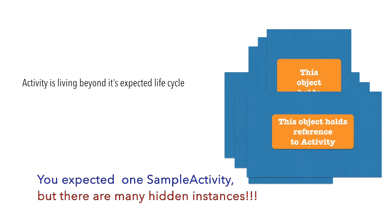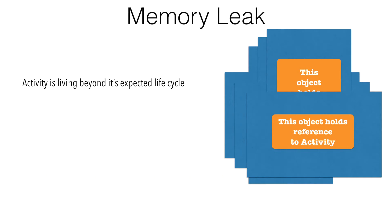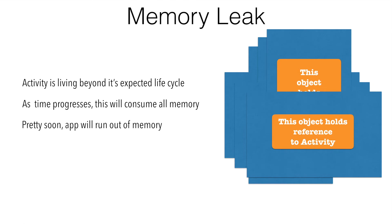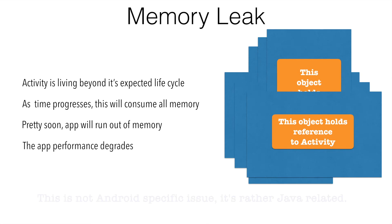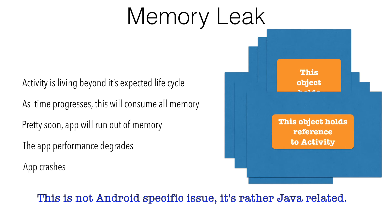This actually leads to a very tricky situation wherein the activity is living beyond its expected life cycle — that is, instead of getting destroyed, the activity is still there. It is not visible to the user but it is still there in the memory of the application. This is called a memory leak. As time progresses, this will consume all the memory and pretty soon the app will run out of memory.